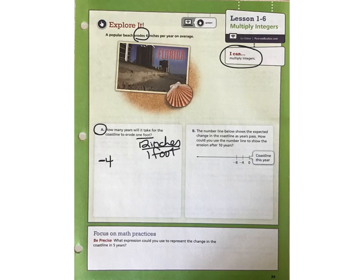So, what can I multiply by a negative 4 in order to get 1 foot of erosion, which again in this case would be a negative 12? How many groups of negative 4 do we need to get to negative 12? Well, remember, we can look at this multiplication problem from the standpoint of repeated addition.